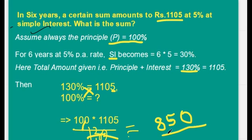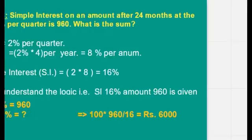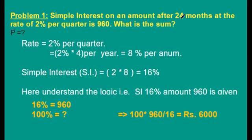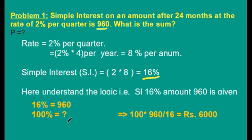We have to find 100% by cross multiplication, which gives 850 rupees as the principal amount. See one more example. Simple interest on an amount after 24 months at the rate of 2% per quarter is 960 rupees. What is the sum? The rate is given per quarter, so we convert to per annum: 2% × 4 quarters = 8% per annum. Simple interest for 2 years = 2 × 8 = 16%. Since 16% equals 960 rupees, by cross multiplying, 100% gives 6000 rupees as the answer.